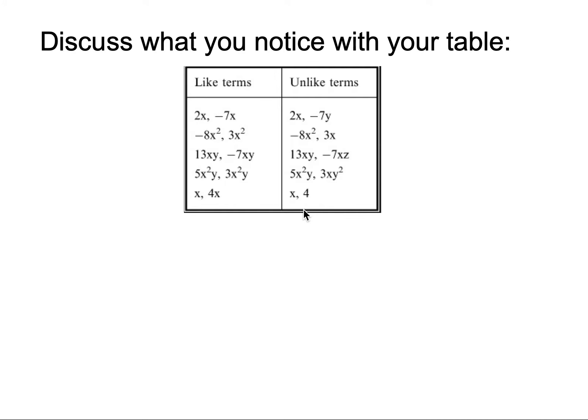I'm going to be talking about expressions. When we talk about expressions, we either have like terms or unlike terms. For like terms, they have exactly the same variable. So if we look at 2x and negative 7x, they both have an x to the first power, so that's what makes them like terms.